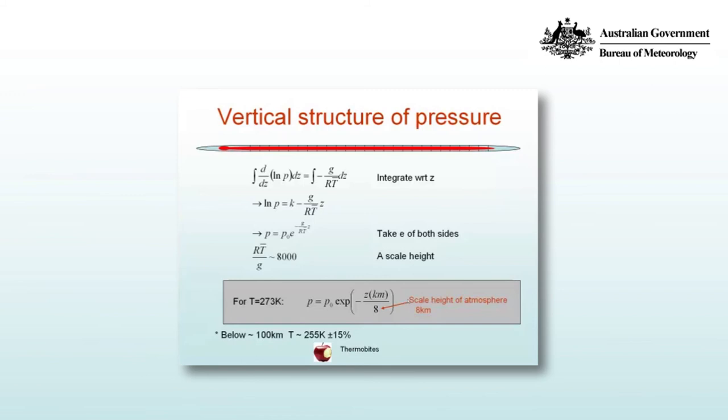That's what's shown here in the top equation. The integral of d/dz of log p dz equals the integral of minus g over RT bar dz. The left hand side integrates to log p and the right hand side we have minus g over RT bar times z and a constant of integration k.